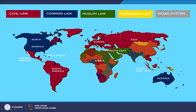A world map shows the distribution of legal systems — the red areas represent civil law countries, North America follows common law, South America follows civil law, and the Middle East shows Islamic law in green. India is a case of mixed law. The different colors on the map help visualize which legal systems are followed in different parts of the world, including areas with customary and mixed systems.